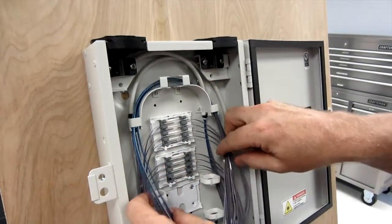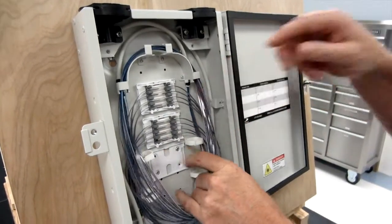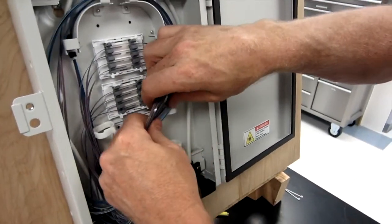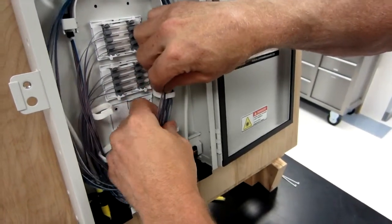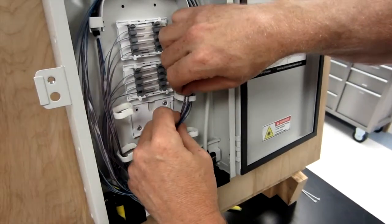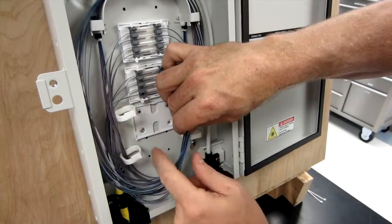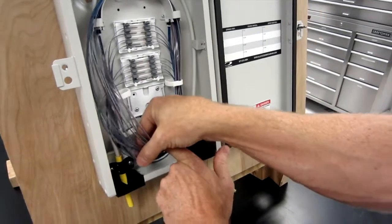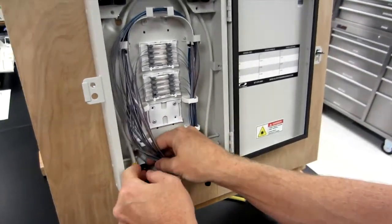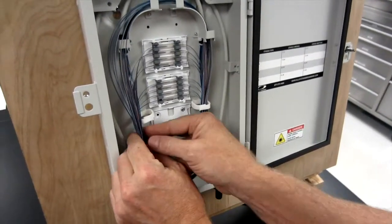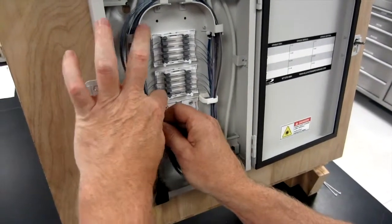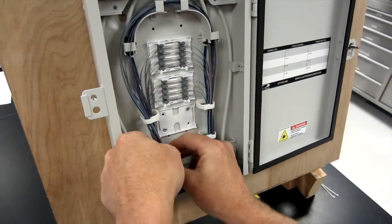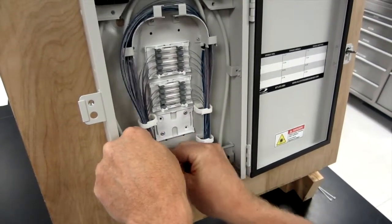Then we're going to take all our ribbons on the right side and we're just going to lay them over and slide them into our fiber clips, first at the top and then at the bottom. Then we're going to do the left side the same way. Make sure that you have all your ribbons. We're going to lay it over, slide those in at the bottom. Some of my ribbons have already gone into the clip, that's okay.